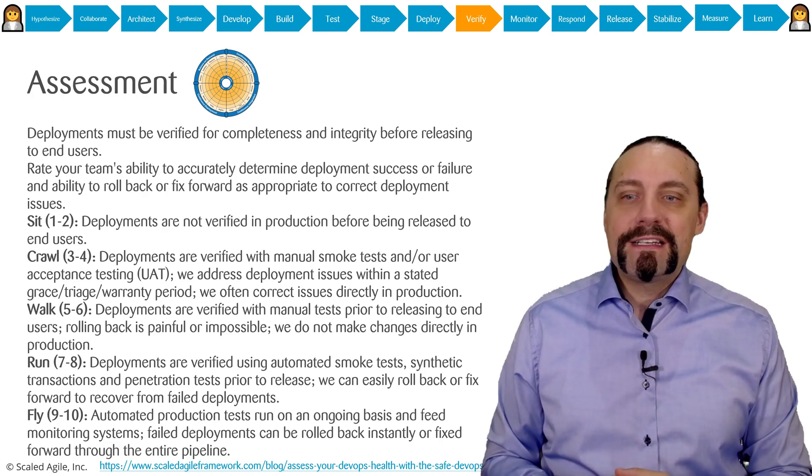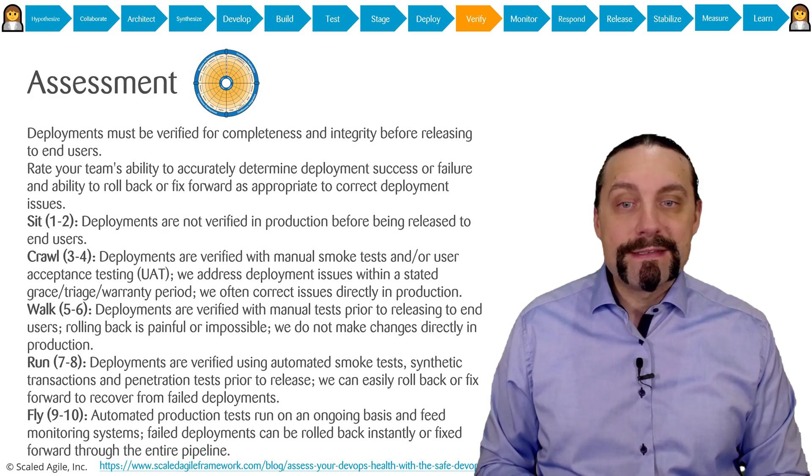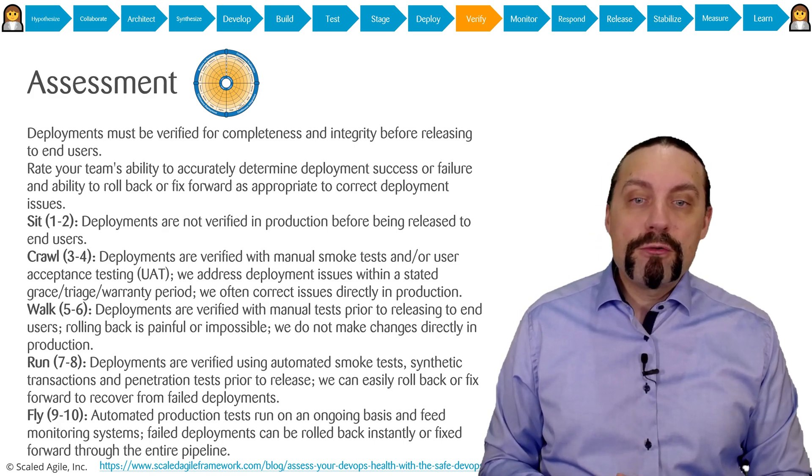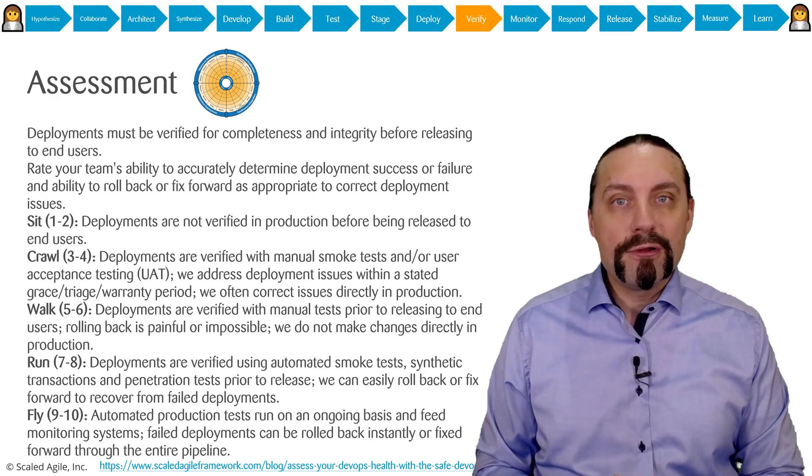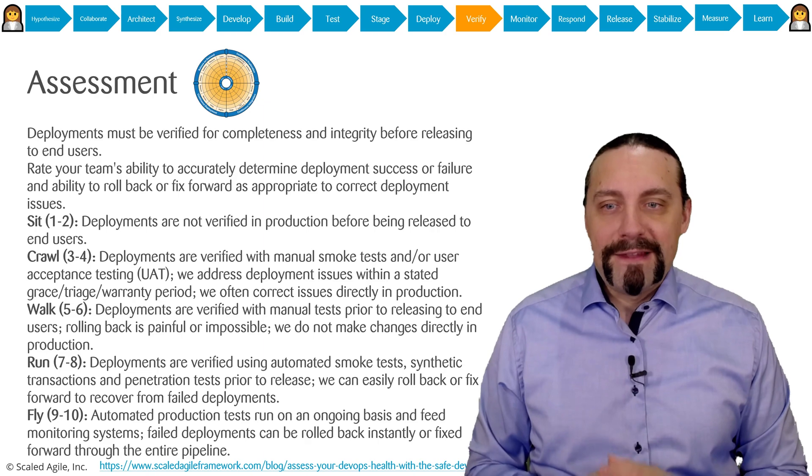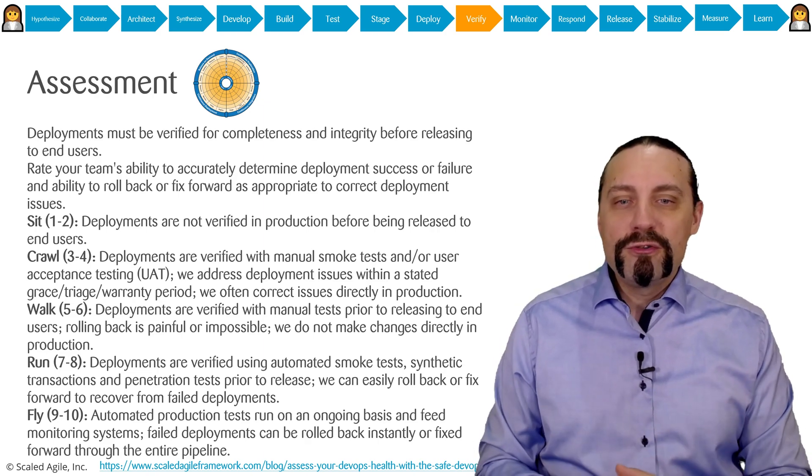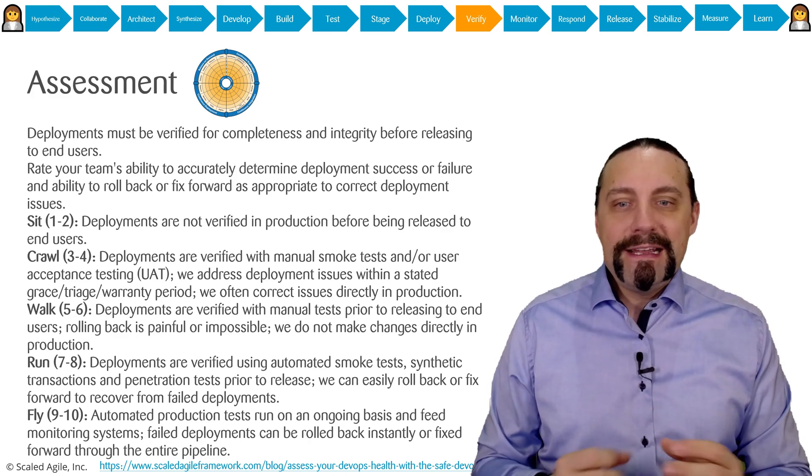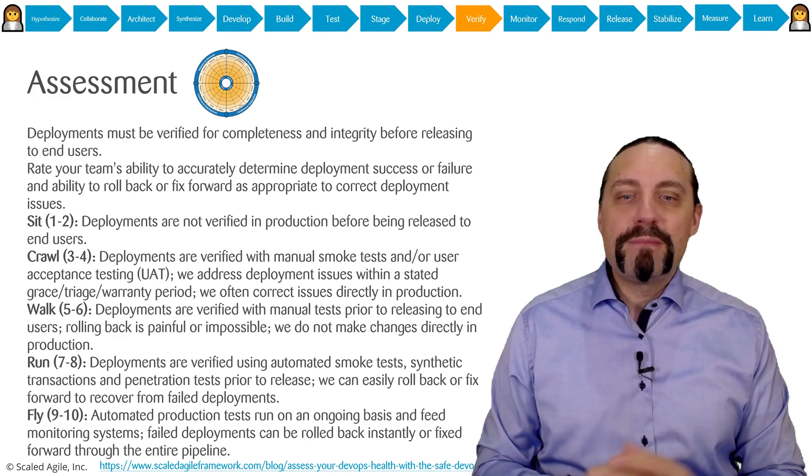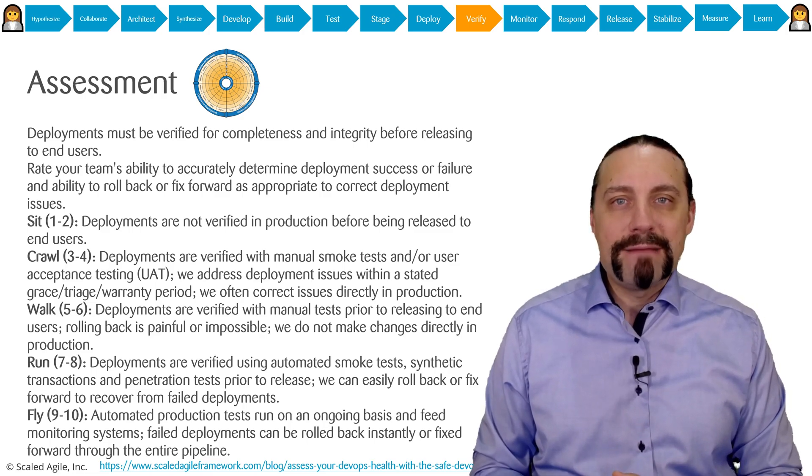And you are at run when deployments are verified using automated smoke tests, synthetic transactions, and penetration tests prior to release. We can easily roll back or fix forward to recover from failed deployments. And you are at fly when automated production tests run on an ongoing basis and feed monitoring systems. Failed deployments can be rolled back instantly or fixed forward through the entire pipeline.